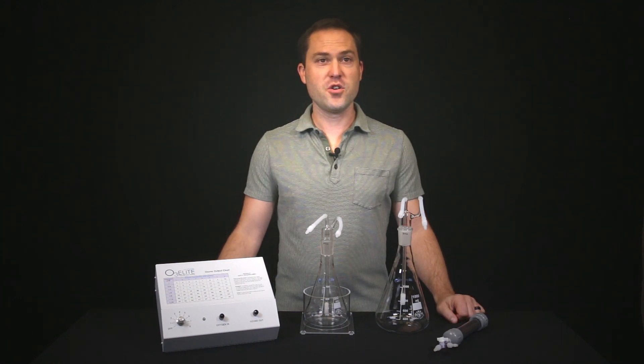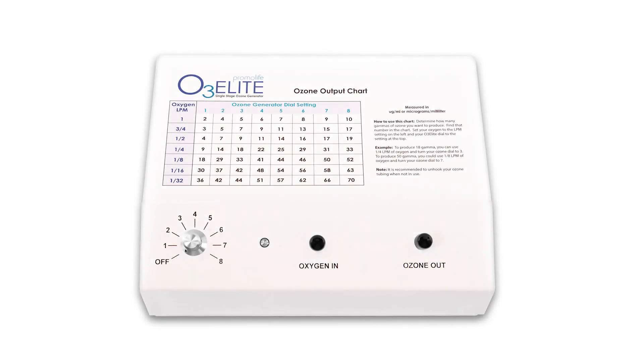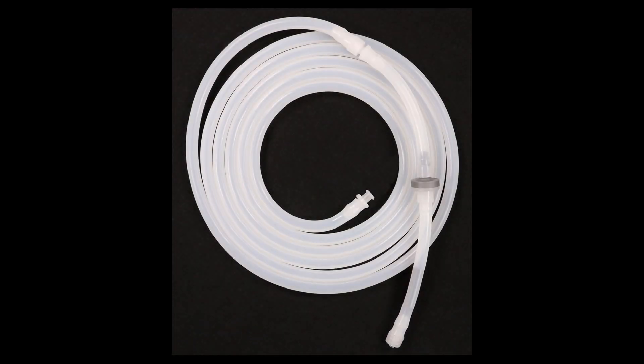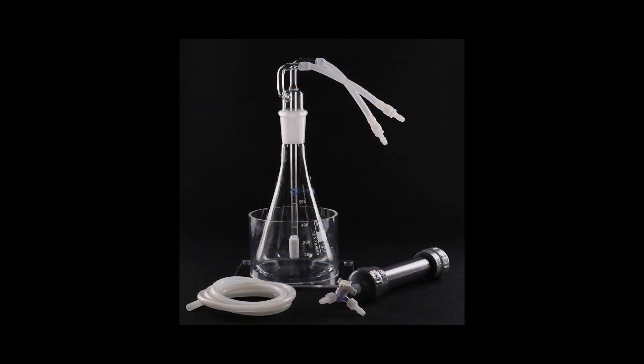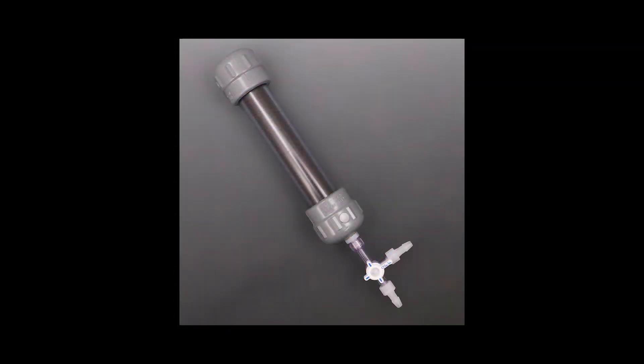To begin, first make sure you have all the accessories needed. These include an O3Elite single ozone generator, tubing with a check valve attached to 5 feet of silicone tubing, an ozone water bubbler humidifier combo, 3 feet of silicone tubing, and an ozone destruct system.